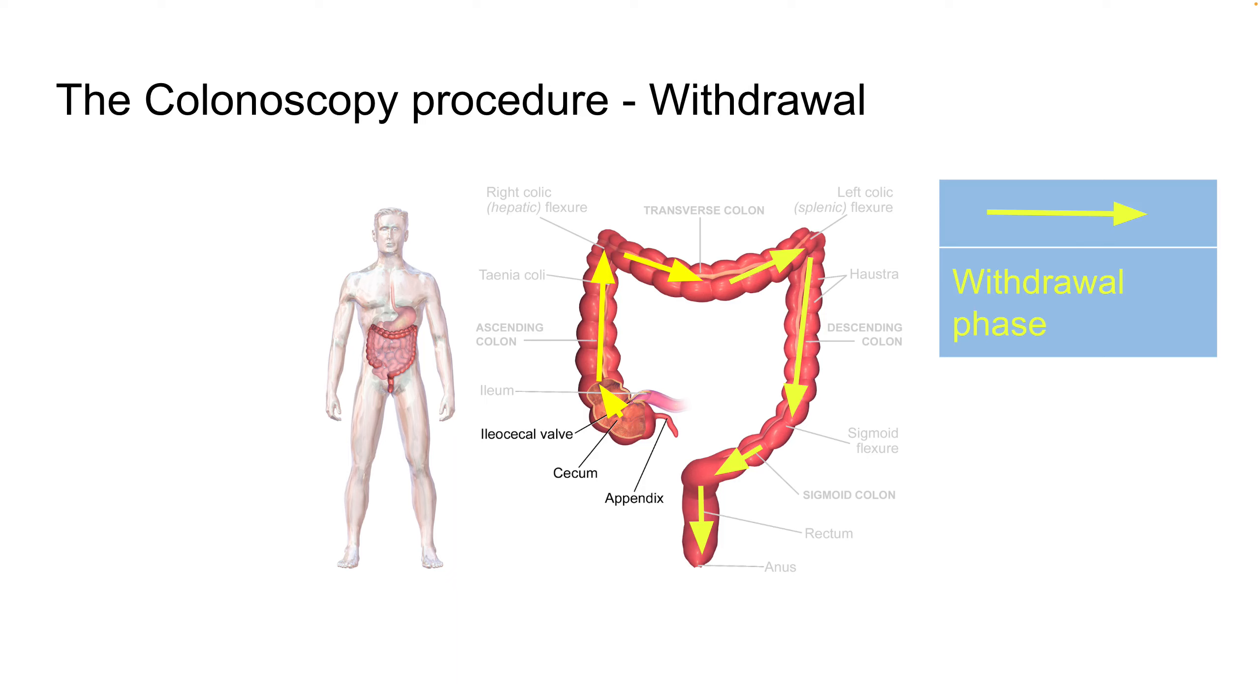Once the cecum is reached, the magic begins. This is where the withdrawal phase starts, and this is where the practitioners detect and dissect the polyps. In this phase, the movement is mostly backwards, unless a polyp is detected and then the practitioner stops to dissect the polyp, or pictures are taken, or a sample is taken from the colon. But for most procedures, the movement is linearly backward.